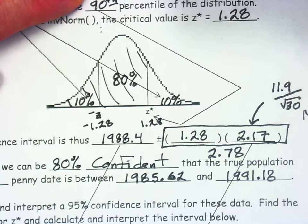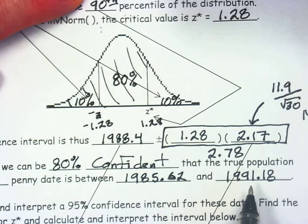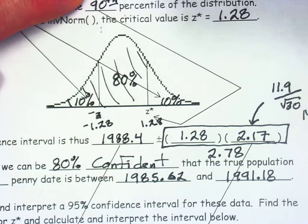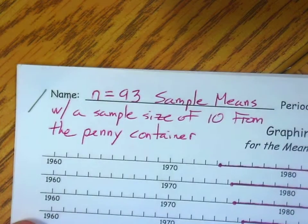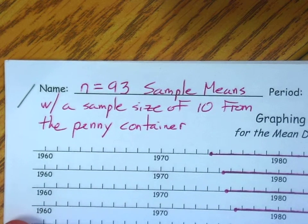if we repeated this process many times, 80% of the confidence intervals we build using this method will capture the truth. We do know what the truth is — the true mean was 1989.27. So this happens to be one of the 80% of confidence intervals built using this method that will capture the truth. Let me illustrate very specifically what we mean by 80% confidence.